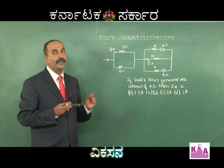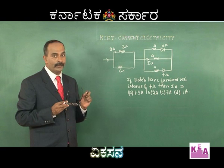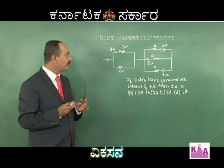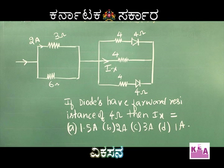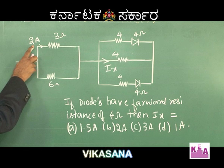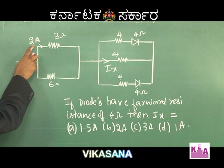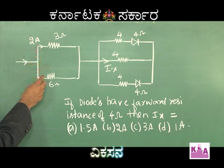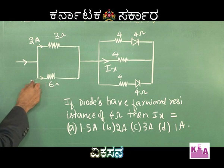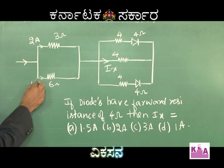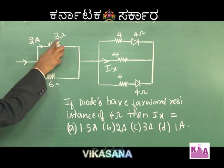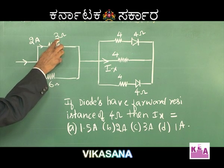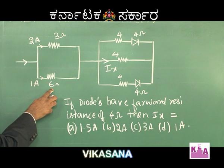This is a typical J level question. We have 2 amperes of current flowing through the 3 ohm resistance. If this is 2 ampere, then this will be 1 ampere. Because this is 3 ohm and this is 6 ohm — current should be in the inverse ratio of the resistances.